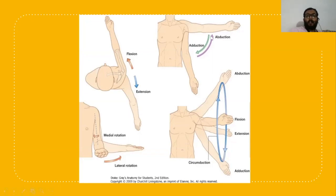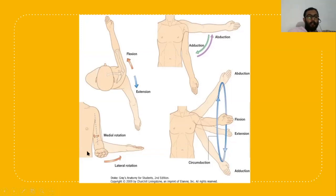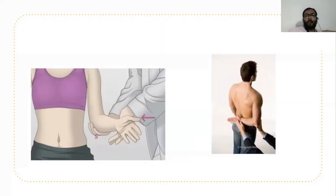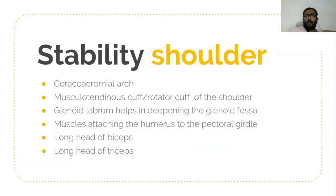Just opposite to abduction is adduction. When the arm touches towards the opposite shoulder, it helps in adduction — this is the actual movement of adduction. Medial rotation and lateral rotation are done with the elbow in 90 degrees of flexion. The complete medial rotation of the shoulder joint is when the patient is able to touch the opposite scapula — the complete range of internal rotation is 90 degrees.